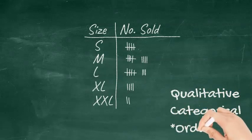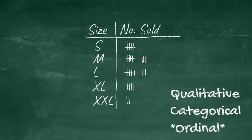This is still qualitative and categorical data. But this time the data is ordinal, as the sizes have a specific order.